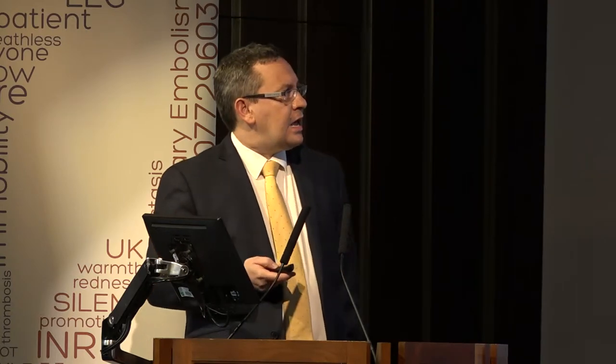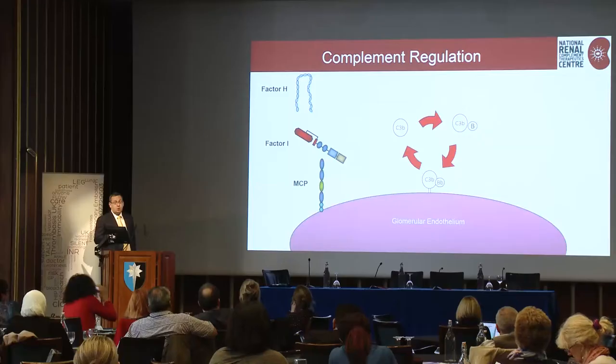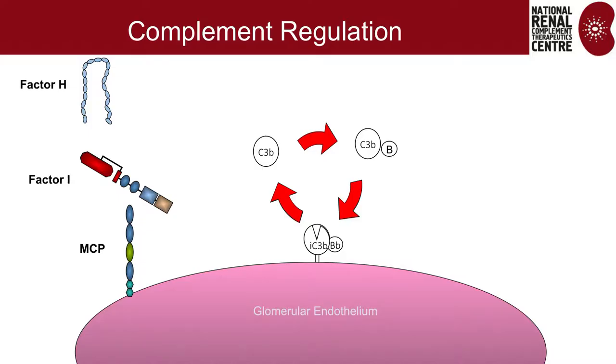Rapidly you get upregulation, and unchecked you get the anaphylatoxins C3a and C5a, the opsonin C3B, and the membrane attack complex. It's evolved to kill bugs; however, it's not very good for your kidney. And because of that, you have complement regulatory proteins.